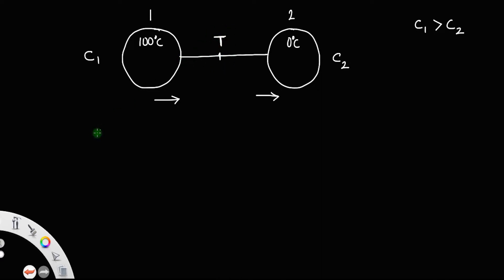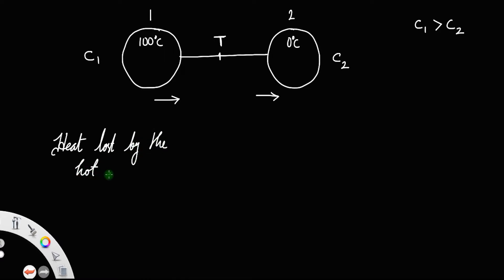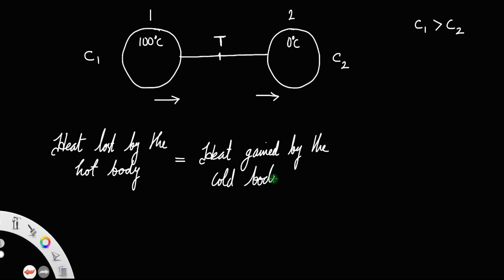Let t be their common temperature. The hot body always loses heat and the cold body always gains heat, so heat lost by the hot body is equal to heat gained by the cold body. The amount of heat transfer is always equal to the product of mass of the body, its specific heat, and its change in temperature.